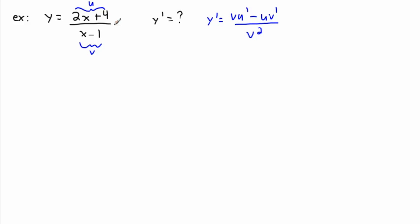It's a matter of taking your shopping list. I need u, v, u prime, and v prime. So u is 2x plus 4, and v is x minus 1.